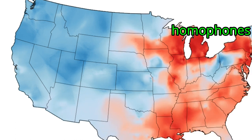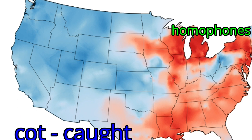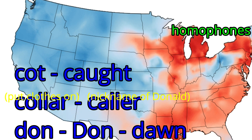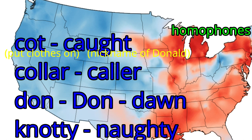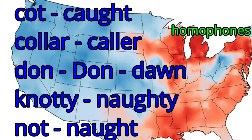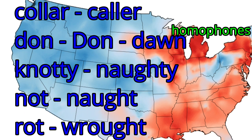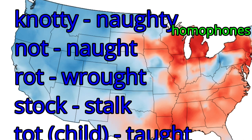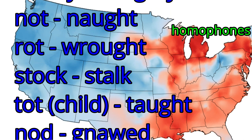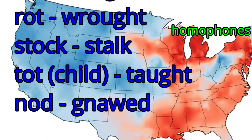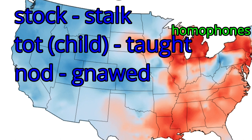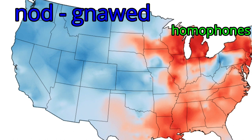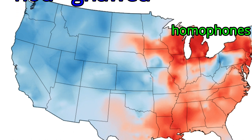Caught, cot. Collar, collar. Don — to put clothes on. Don — nickname of Donald. Naughty, knot. Not. Rot. Stock. Tot — a very young child. Taught. Nod.